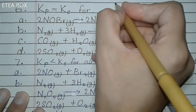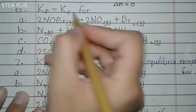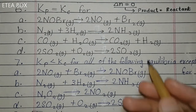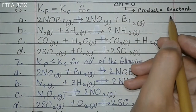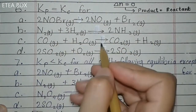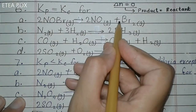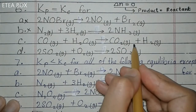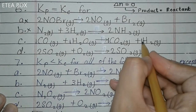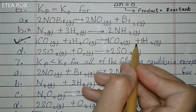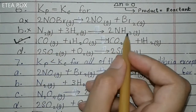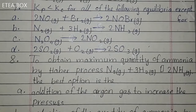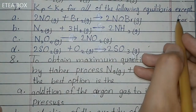Kp is equal to Kc for which of the following reactions? We know Kp = Kc when Δn = 0, meaning the number of moles of product equals the number of moles of reactant. The first option: product is 3 moles, reactant is 1 mole — incorrect. Second: product 2 moles, reactant 4 moles — incorrect. Third: product is 2 moles and reactant is also 2 moles — two minus two equals zero. So Kp = Kc. Option C is correct.